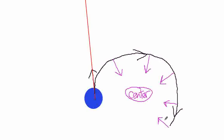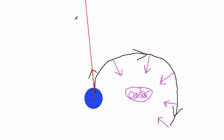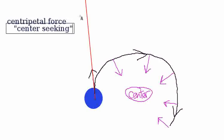All of that was to say that if you want something to move in a circle — let's say moving in a circle at a constant speed — you need to keep applying a force towards the center. The strength of the force doesn't need to change, so the magnitude will be constant. However, the direction will keep changing such that it's always pointing towards the center. Physicists call this a centripetal force, where centripetal means center-seeking.